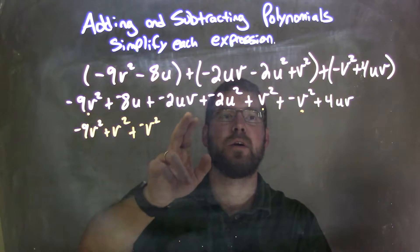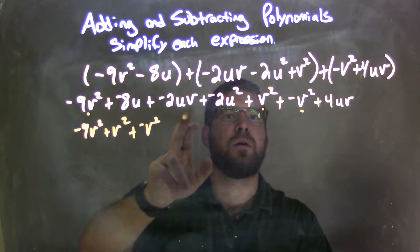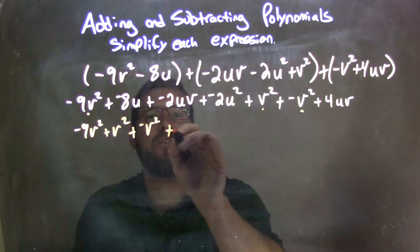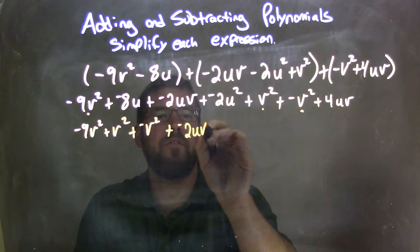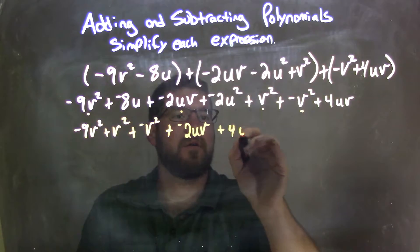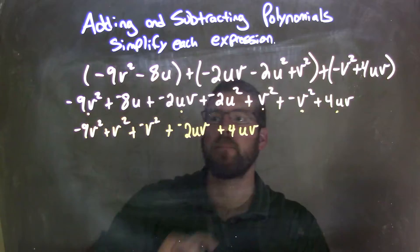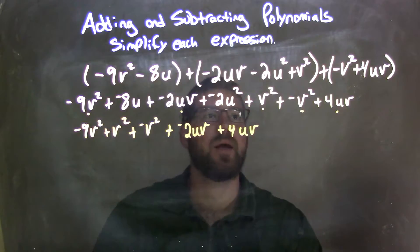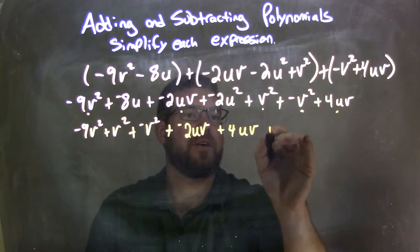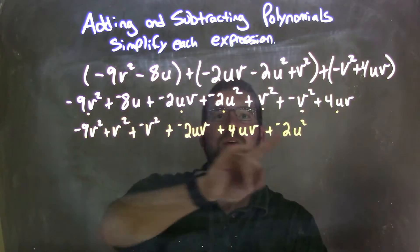Then my uv's: I have one uv here, so I have a plus a negative 2uv — brought that down — and I have a plus a positive 4uv. Double checking... no, that's it for uv's.